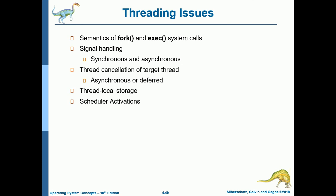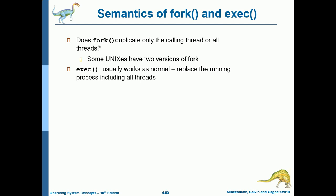Threading issues include: semantics of fork and exec system calls, signal handling (synchronous or asynchronous), thread cancellation of the target thread (asynchronous or deferred), thread local storage, and scheduler activation. For fork and exec semantics, the question is whether fork duplicates only the calling thread or all threads. Some Unix systems have two versions of fork, and the exec function usually works as normal — replacing the running process including all threads.